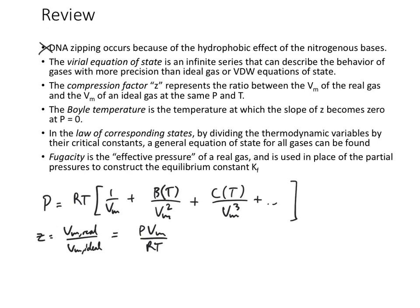We also saw the Boyle temperature. If we plot the compression factor against pressure, the Boyle temperature is the temperature where the curve has a slope of zero at low pressures — it comes straight out and then curves up. The Boyle temperature for a van der Waals gas equals A divided by RB.